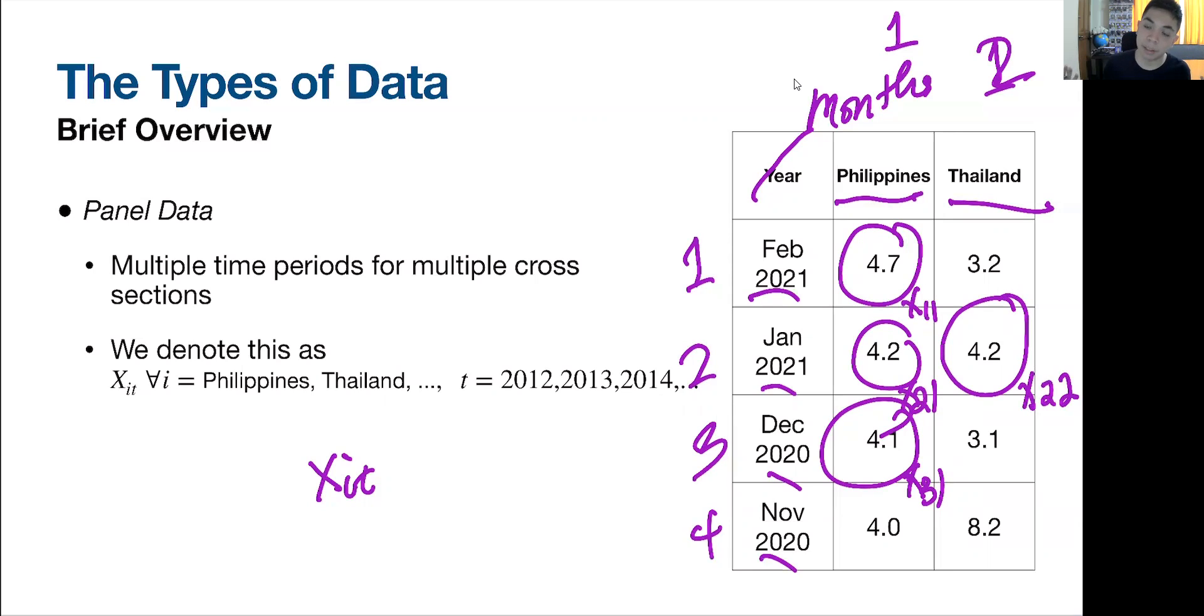That's how a panel data set looks like. We have specialized models for panel data, such as the fixed and the random effects. And we have special types of models for time series data sets as well, such as the ARIMAS, the SARIMA, the VARs. Then we have our basic regression models that fit into cross-sectional data and some more advanced ones dealing with survey data. Those are the general types of data that we will encounter in econometrics.